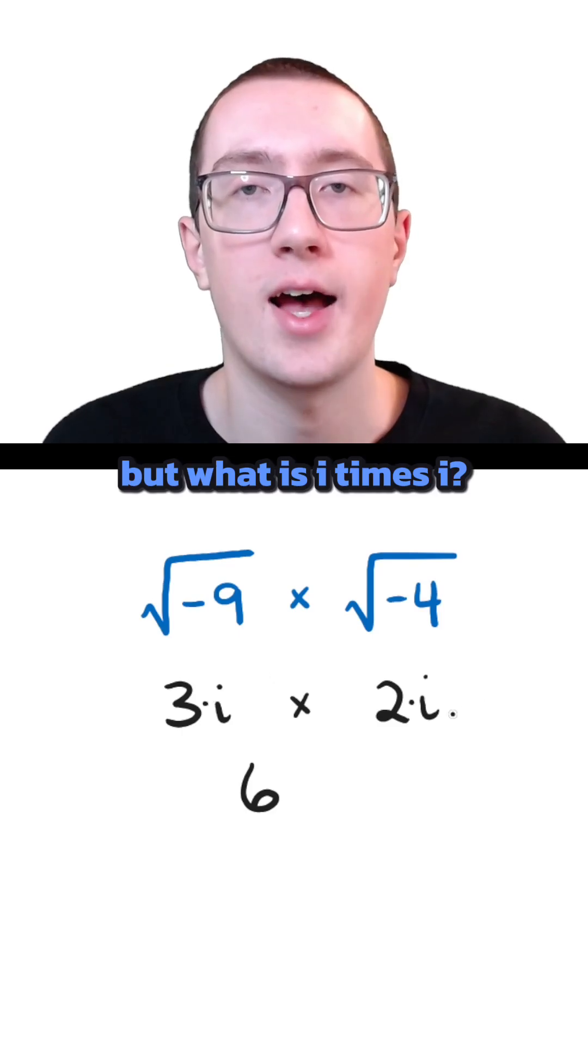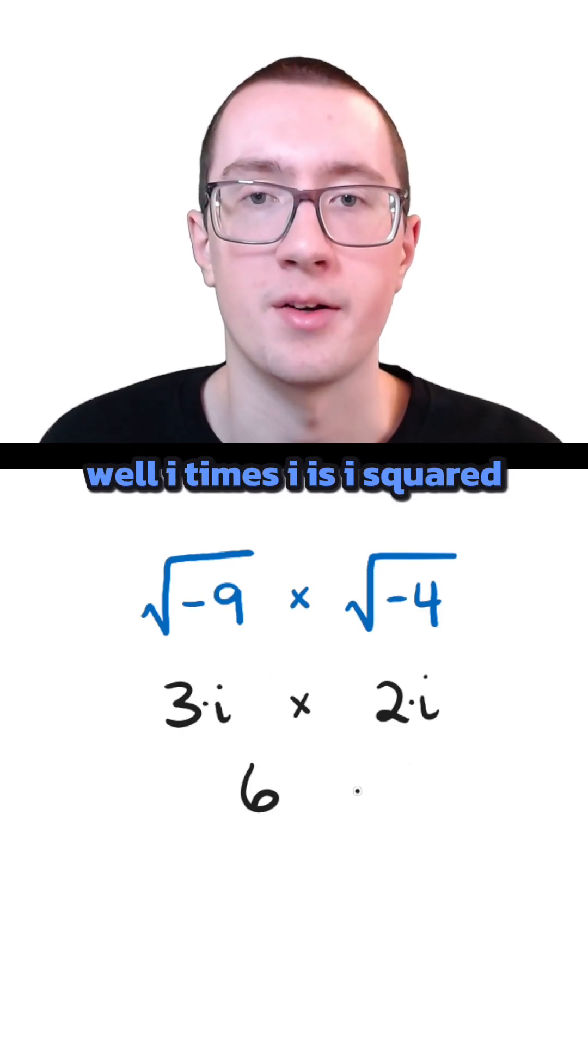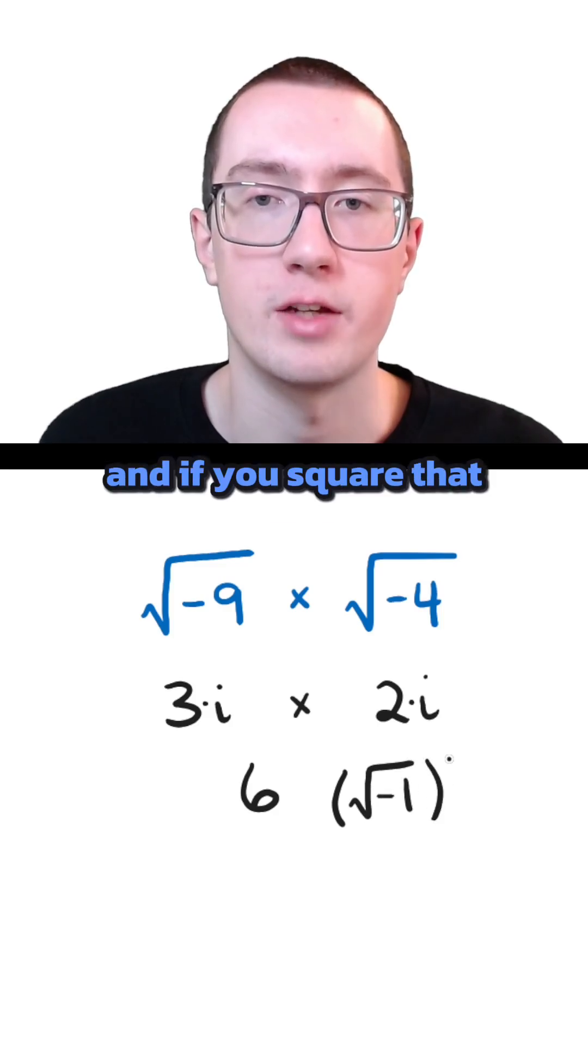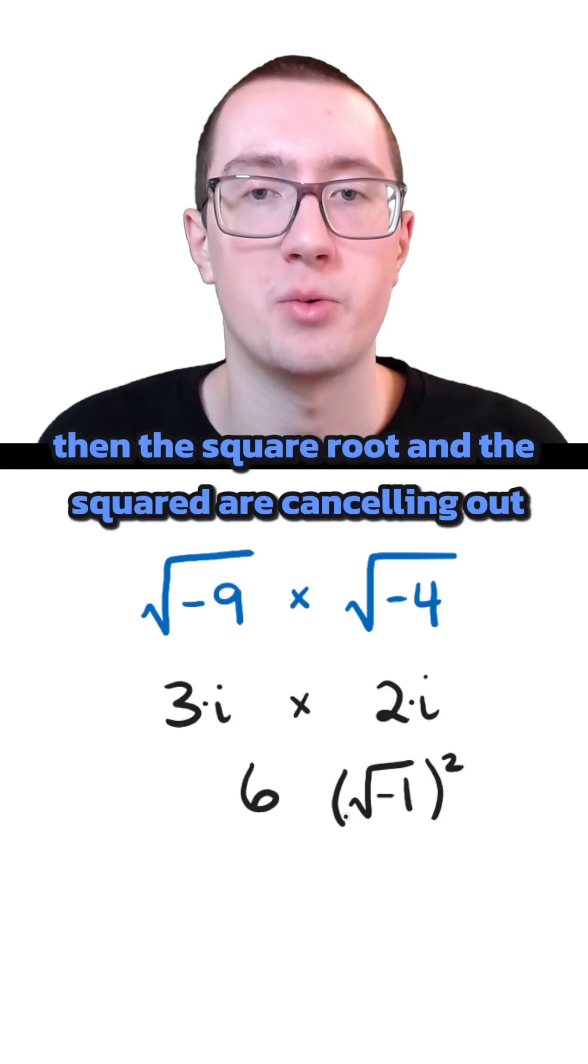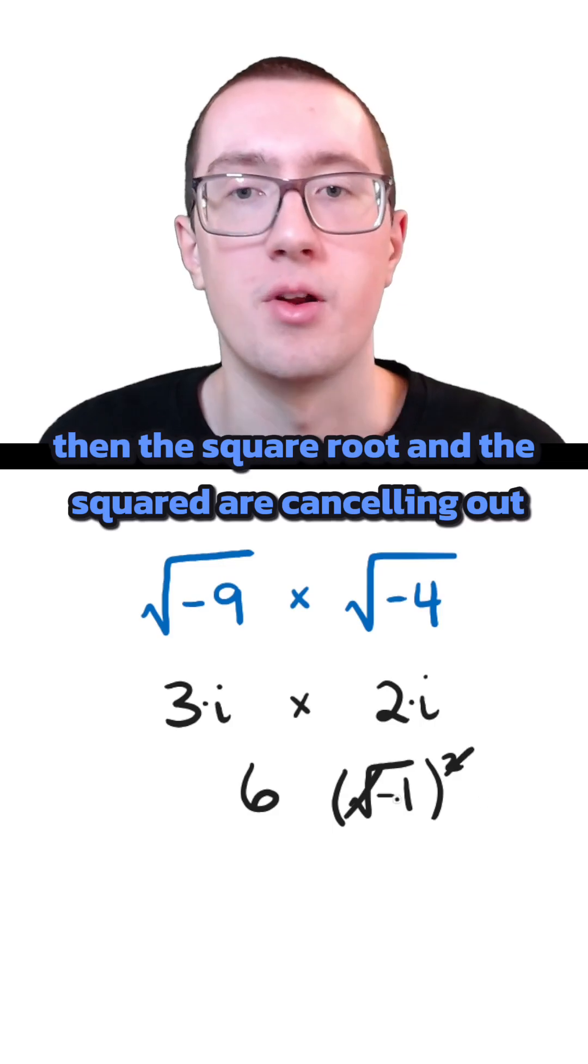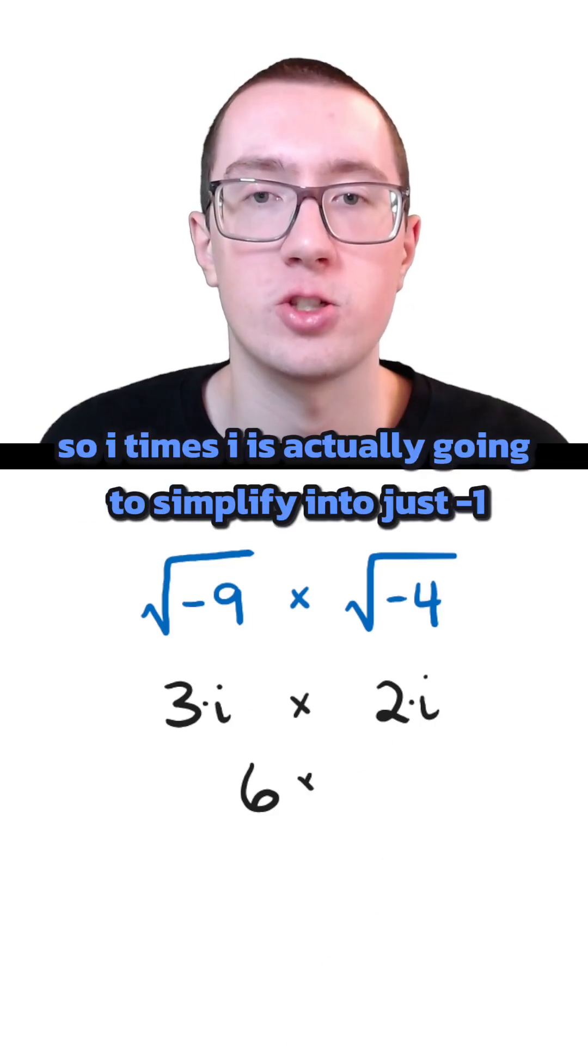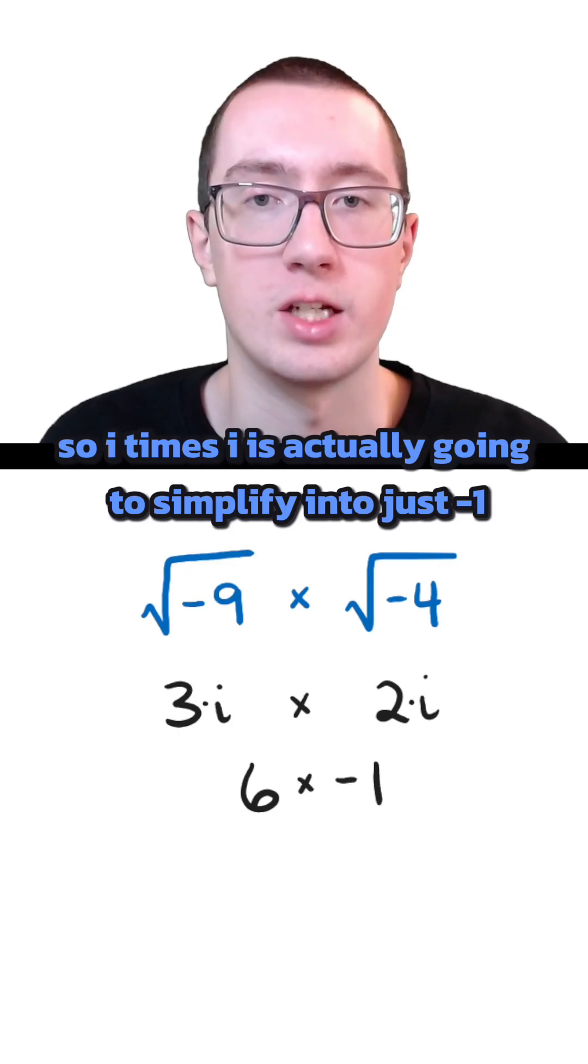But what is i times i? Well, i times i is i squared, but i is also the square root of negative 1. And if you square that, then the square root and the squared are canceling out. And all that's left is the negative 1. So i times i is actually going to simplify into just negative 1.